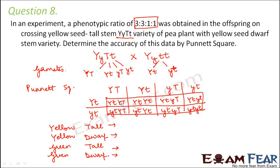Counting yellow tall (at least one Y, at least one T): we find three such combinations. For yellow dwarf (at least one Y, but homozygous tt): we find three such combinations — so yellow dwarf also gives three. For green tall (homozygous yy, at least one T): we find one. For green dwarf (homozygous yy and homozygous tt): we find one. So the phenotypic ratio is 3:3:1:1, which exactly matches the given data — the phenotypic ratio mentioned in the question is accurate.